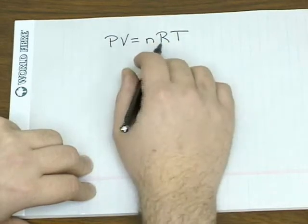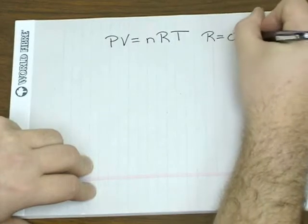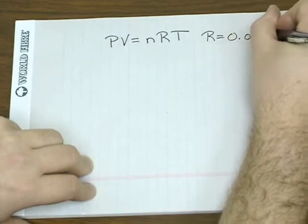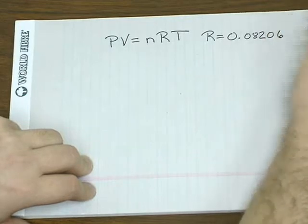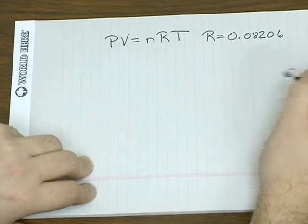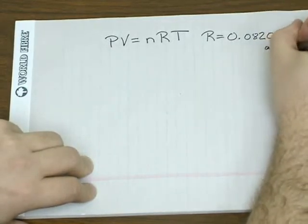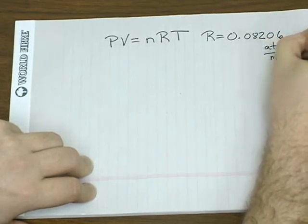The fifth thing in this equation, R, is known as the gas constant. The most common way you see R is with the value 0.08206, with units of atmosphere liter over mole kelvin.